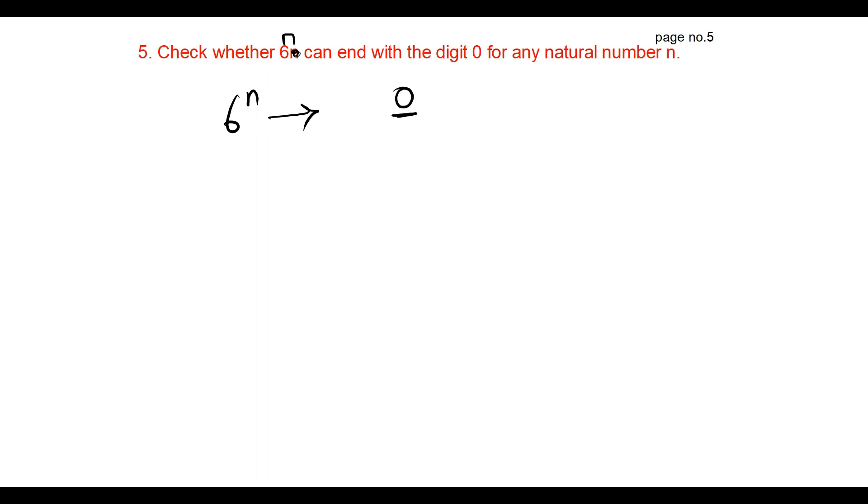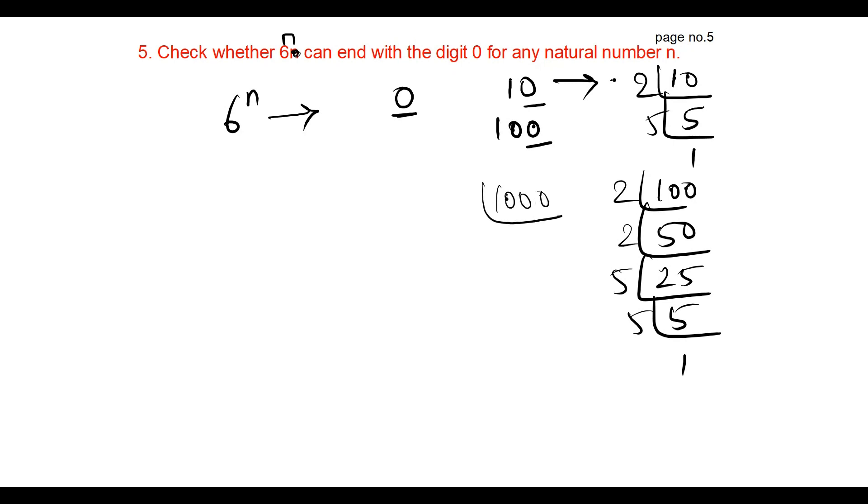The ending number should be 0, so consider 10. If I do prime factorization, I will get 2 × 5. If I take 100, I get 2² × 5². Consider 1000: prime factorization gives 2³ × 5³. Similarly for 10,000, I will get 2⁴ × 5⁴, and this will go on.